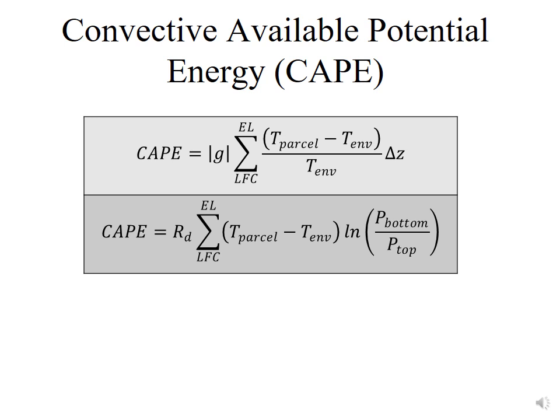The more layers you divide the CAPE calculation into between the level of free convection and the equilibrium level, the more accurate a value you'll get for the convective available potential energy.